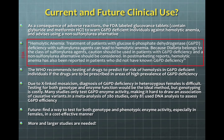The current implications of these studies and adverse reactions were that the FDA labeled Glucovance tablets — which contain glyburide and metformin — to warn G6PD-deficient individuals against hemolytic anemia and advises using a non-sulfonylurea alternative. This red box here is the actual FDA label. The WHO also recommends testing of drugs to predict the risk for hemolysis in G6PD-deficient individuals, especially in areas with high prevalence of G6PD deficiency.